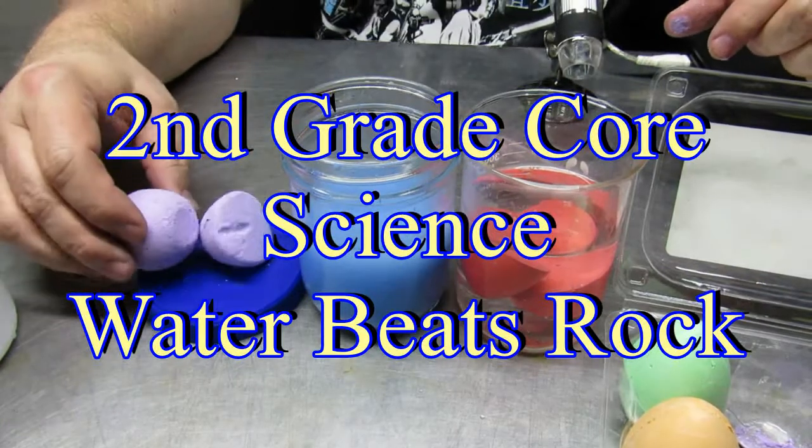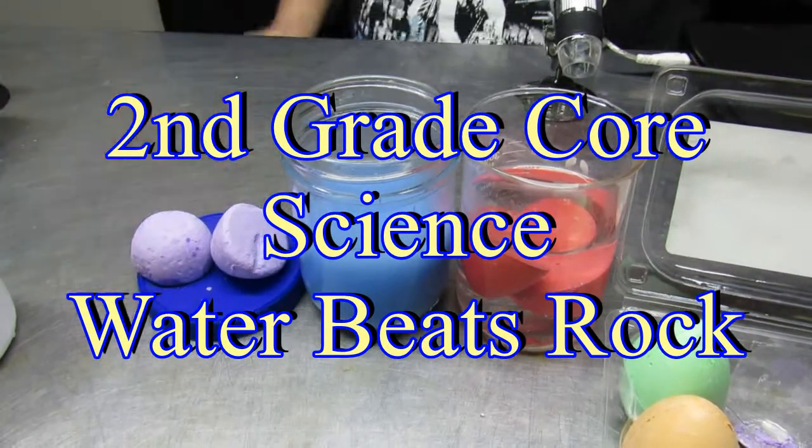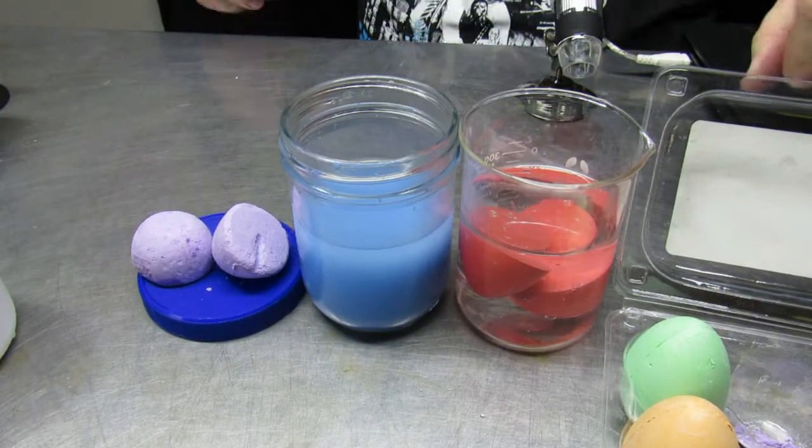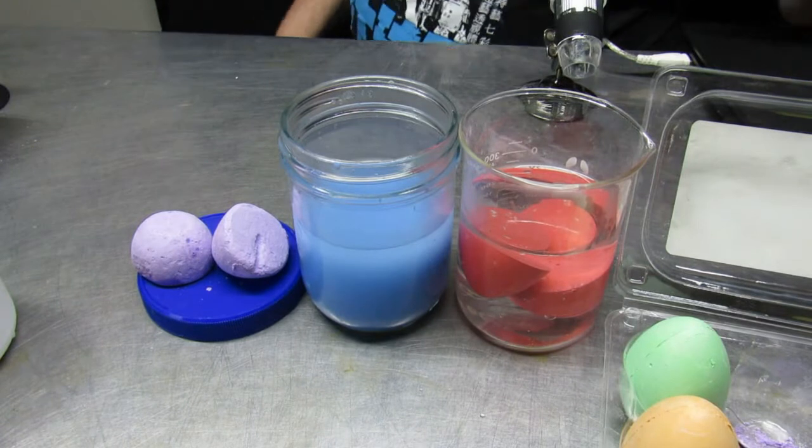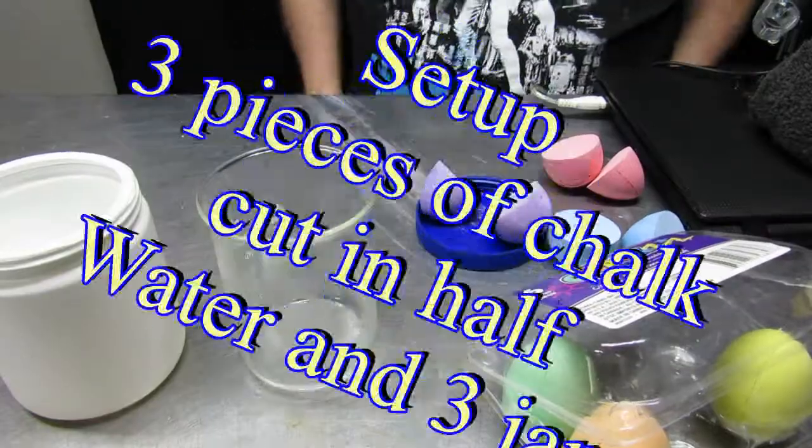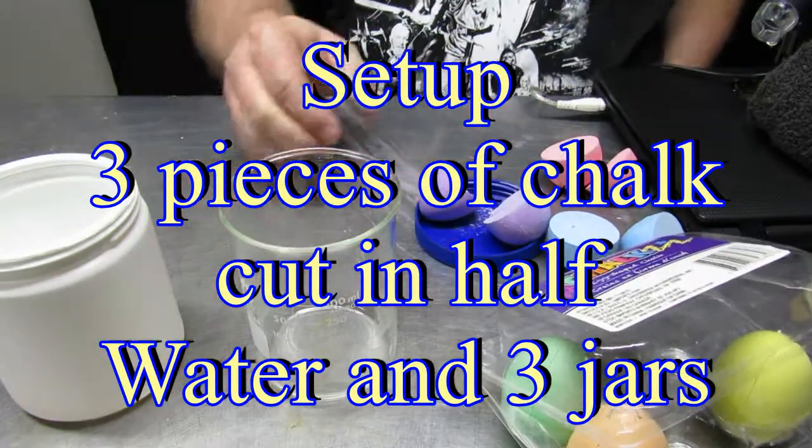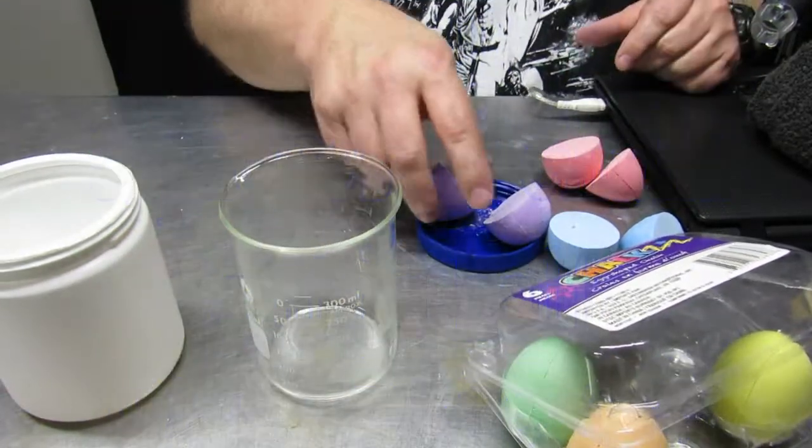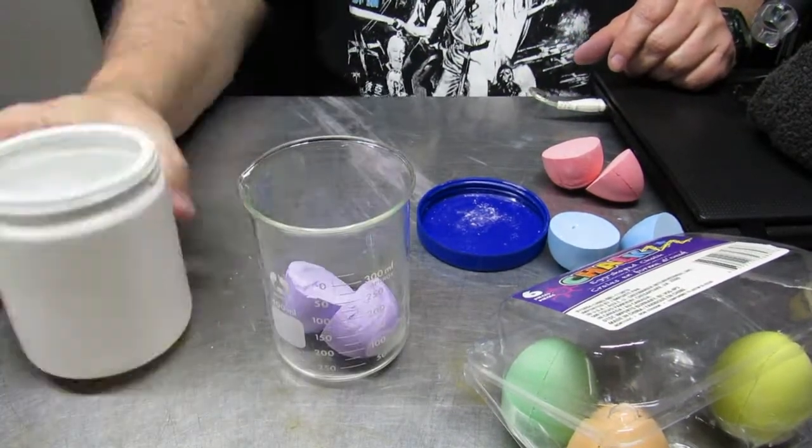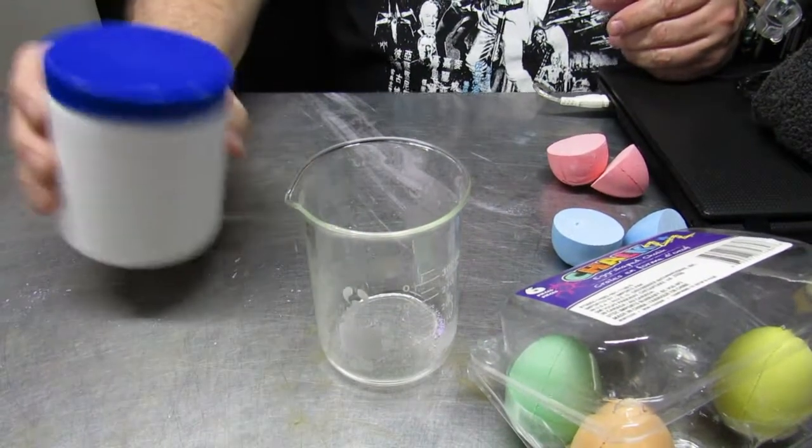Today's two minutes of science, we're going to look at a second grade core science experiment called water beats rock. We're going to start with three pieces of chalk that had been cut in half, some water, and three jars. In this case it's a beaker and a plastic container so that we can shake things up.